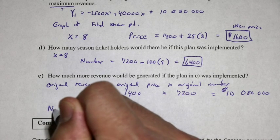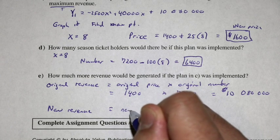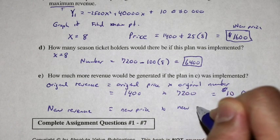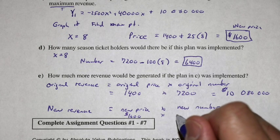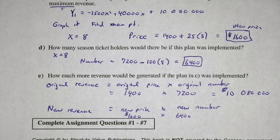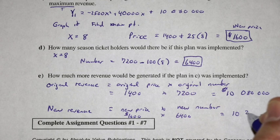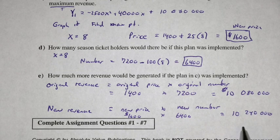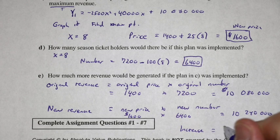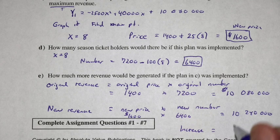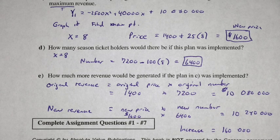How much more revenue is generated? Original revenue was $1,400 times 7,200 equals $10,080,000. New revenue is $1,600 times 6,400 equals $10,240,000 — which is the y value we found at the maximum in the graph. The increase is $10,240,000 minus $10,080,000, which equals $160,000 in increased revenue. So you're ready for your assignment — see you in class.